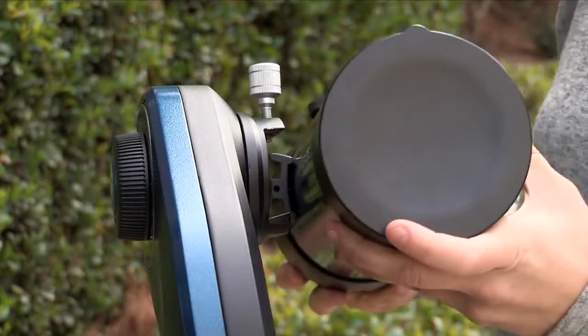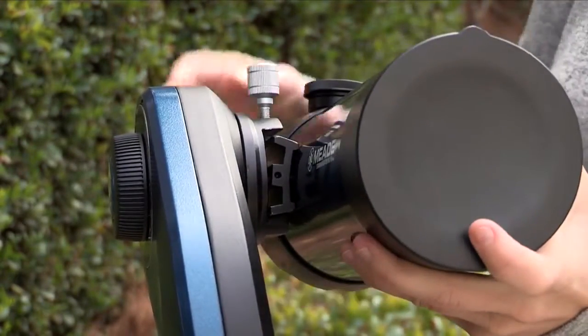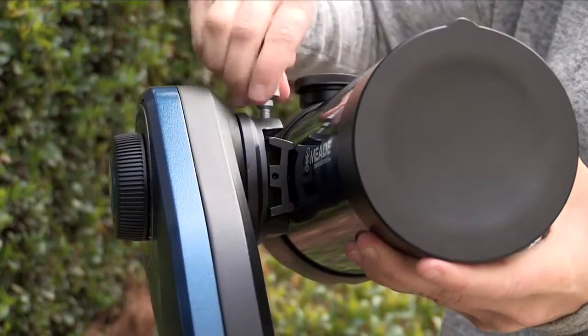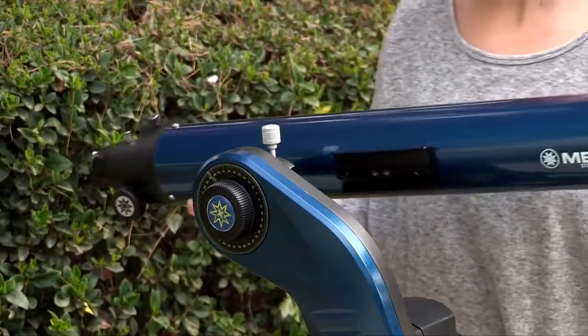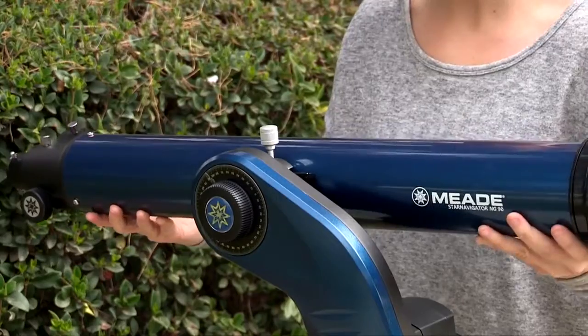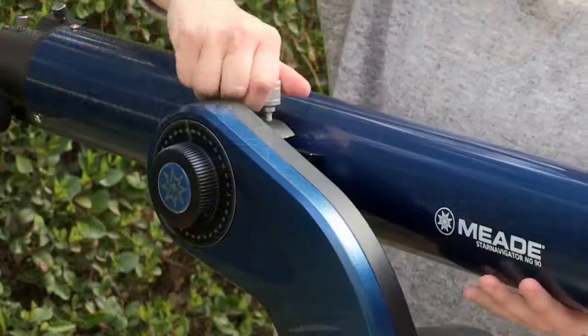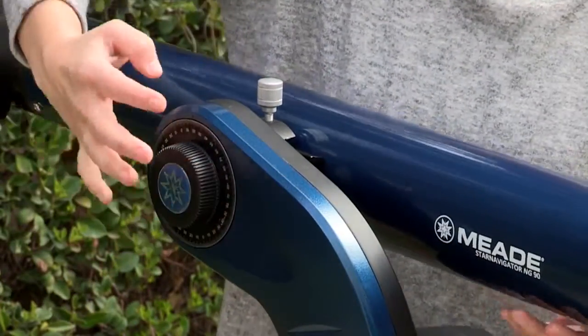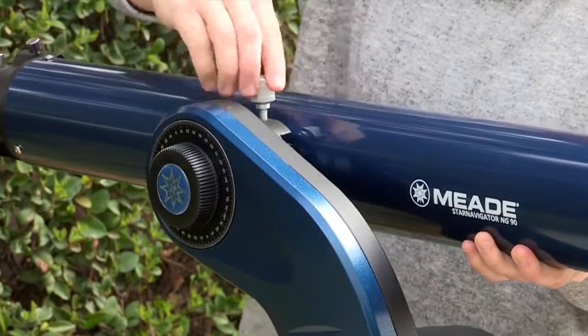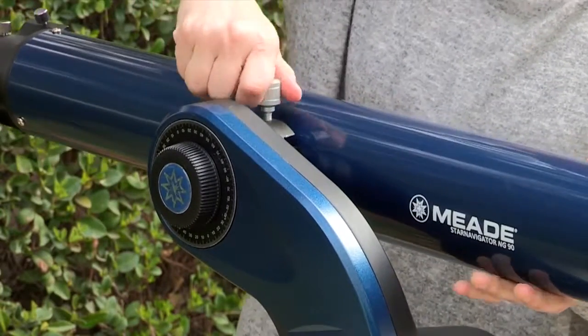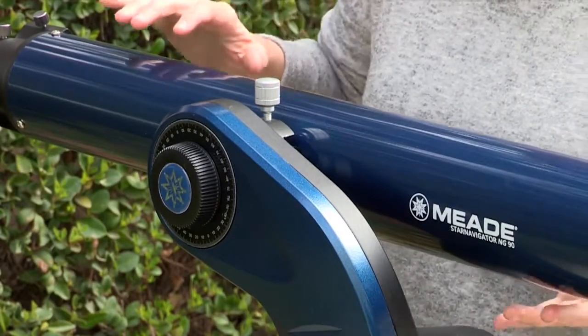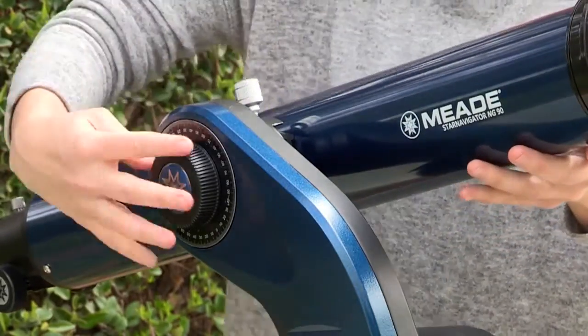The optical tube assembly features a Vixen style dovetail plate which allows the user to easily attach the OTA to the mount. Slide the OTA onto the dovetail plate and tighten the locking screw. Tighten the deck lock knob so that it holds the optical tube loosely. Slide the tube back and forth until you find a position where the tube remains horizontal and doesn't tip up and down. Tighten the cradle ring's lock knob to a firm feel.